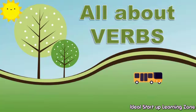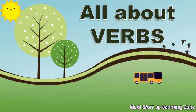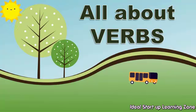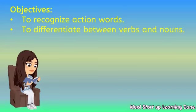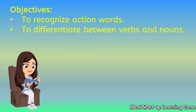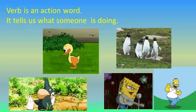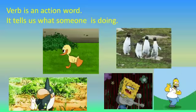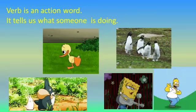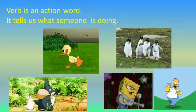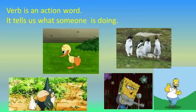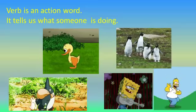Hello kids, I hope you will be fine. Today we will learn all about verbs. The objective is to recognize action words and to differentiate between verbs and nouns. As you have already learned about nouns, at the end of this lesson you will be able to differentiate between verbs and nouns. What is a verb? A verb is an action word. It tells us what someone is doing. As you can see in the picture, different characters are doing different actions.